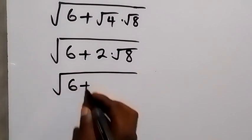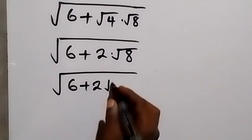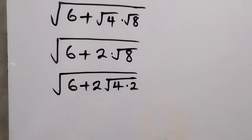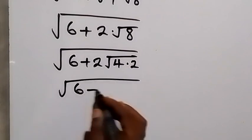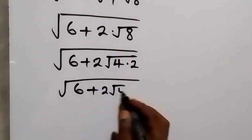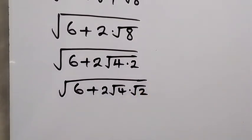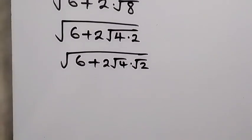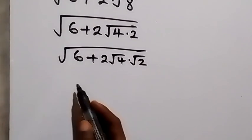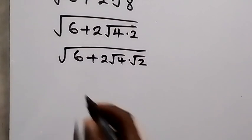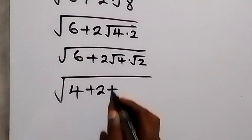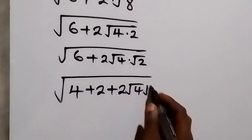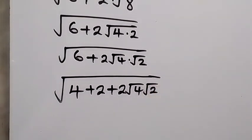We can also break root 8 down further. This becomes square root of 6 plus 2 multiplied by root 4 times root 2, and we can separate that. Also, from here we can break 6 down as 4 plus 2, giving us root of 4 plus 2, then plus 2 root 4 times root 2.